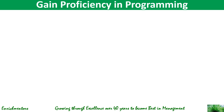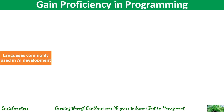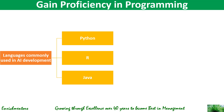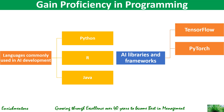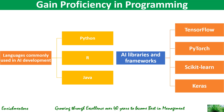You need to develop strong programming skills in languages commonly used in AI development, such as Python, R, and Java. Also learn popular AI libraries and frameworks such as TensorFlow, scikit-learn, and Keras. That's how you can gain proficiency in the right programming languages and tools.